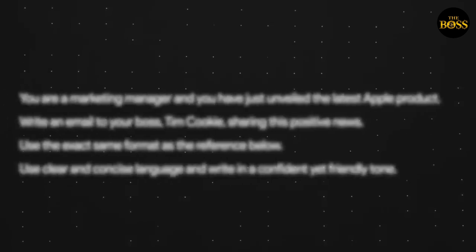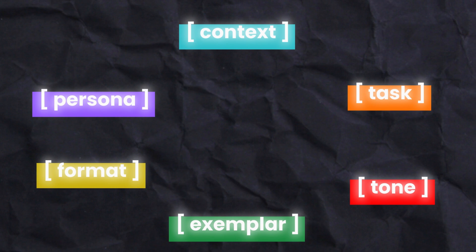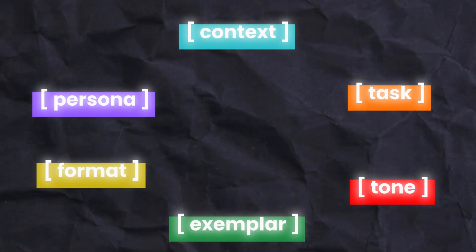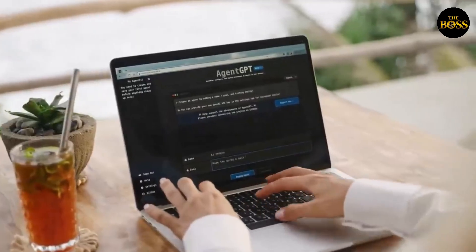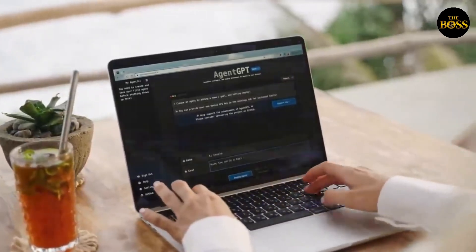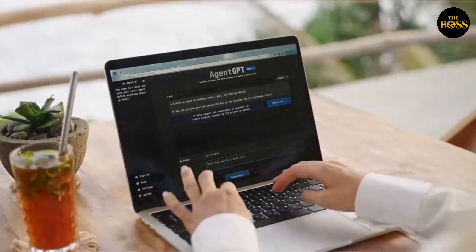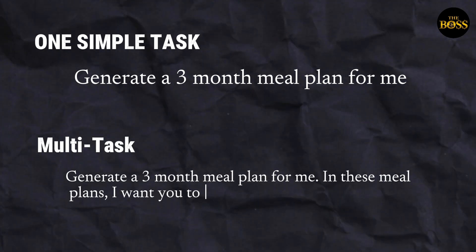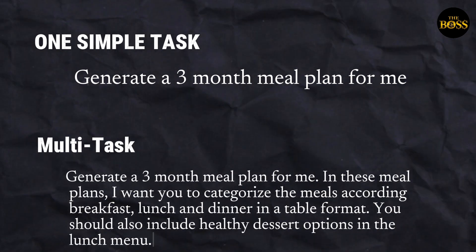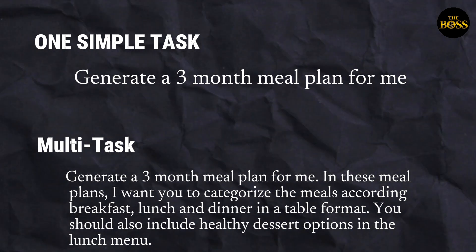Now let's break down each golden component with specific examples, so that you can fully understand the importance of these six golden components in generating amazing results from ChatGPT or Bard. Let's start with the task. It is always important to start the task's sentence with an action verb, such as write, provide, generate, give, etc. It could be one simple task, or you can also have multiple tasks within the same prompt. One simple task would look like this, while a multitask request would look like this.